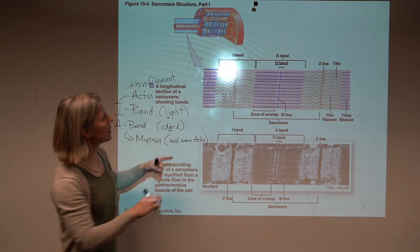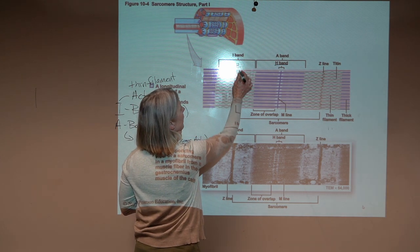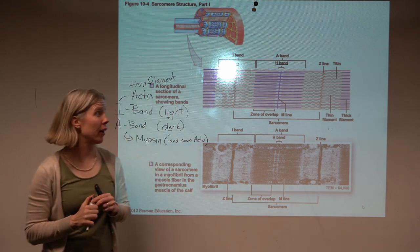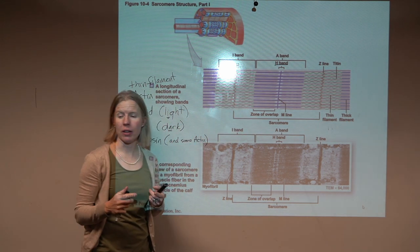In the I band, do notice we do have that Z, that Z line, and it's actually shaped like a Z. So that's at least helpful there. And then also I mentioned these brain squigglies are the titin.